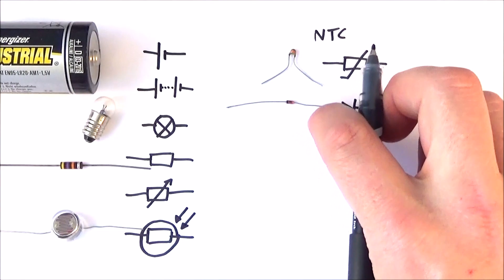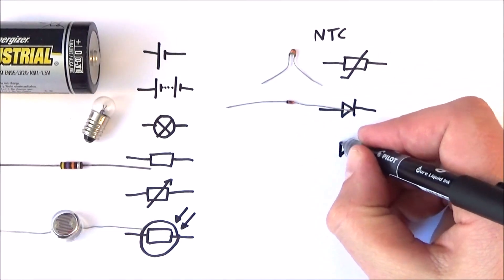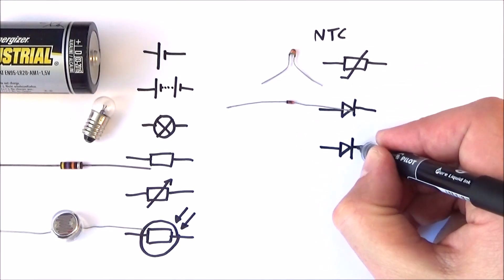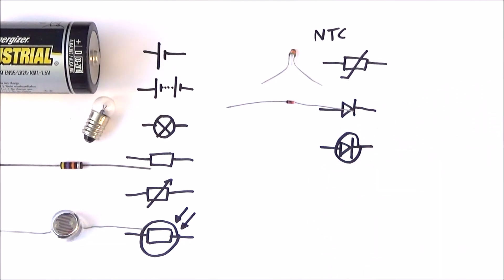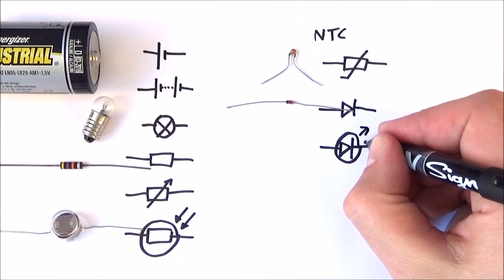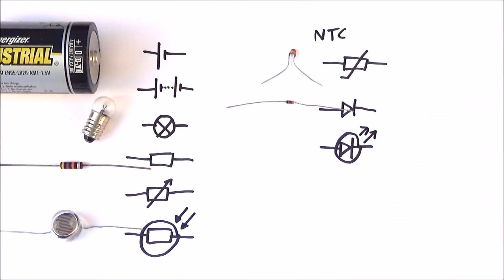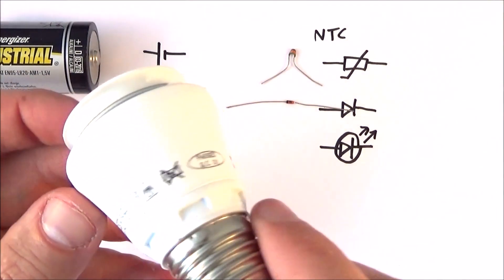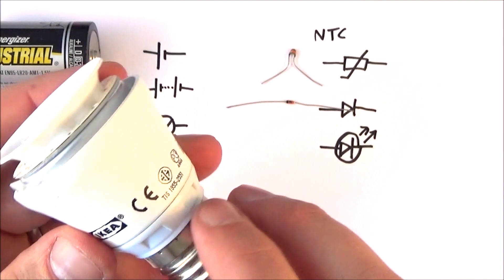Now there's different ways of drawing a diode. Sometimes it just looks like I've drawn here, sometimes we put a circle around it. And there's also a kind of diode that emits light, and the ones that give out light are called the light emitting diodes, and these are big news.